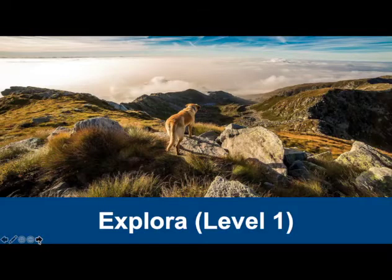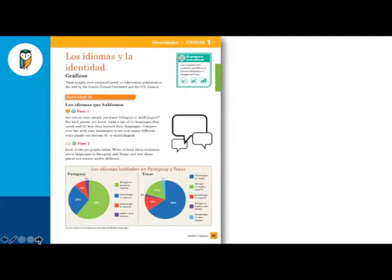Let's look at what it looks like in the Level 1 textbook. Each Explora is divided into two sub-themes related to the theme of the unit. In this case, our unit theme is Identities, and the first sub-theme is Languages and Identities. In this unit we've been looking at Paraguay as our country of focus and Texas as our state of focus, and we can see the first authentic resource students will interact with is a graph of bilingualism and monolingualism in Paraguay and Texas, so students can make those comparisons.